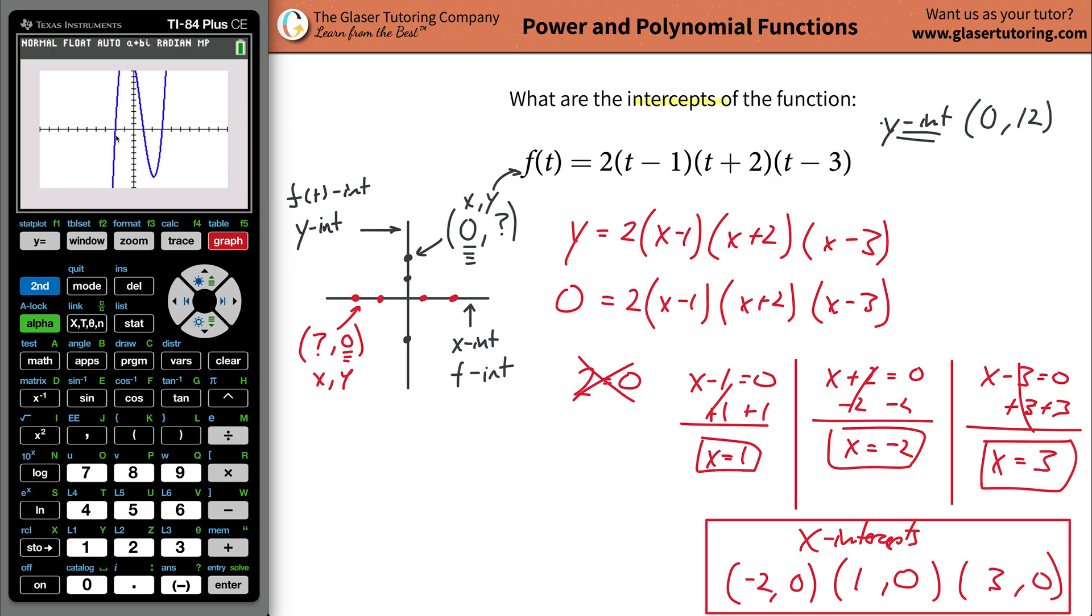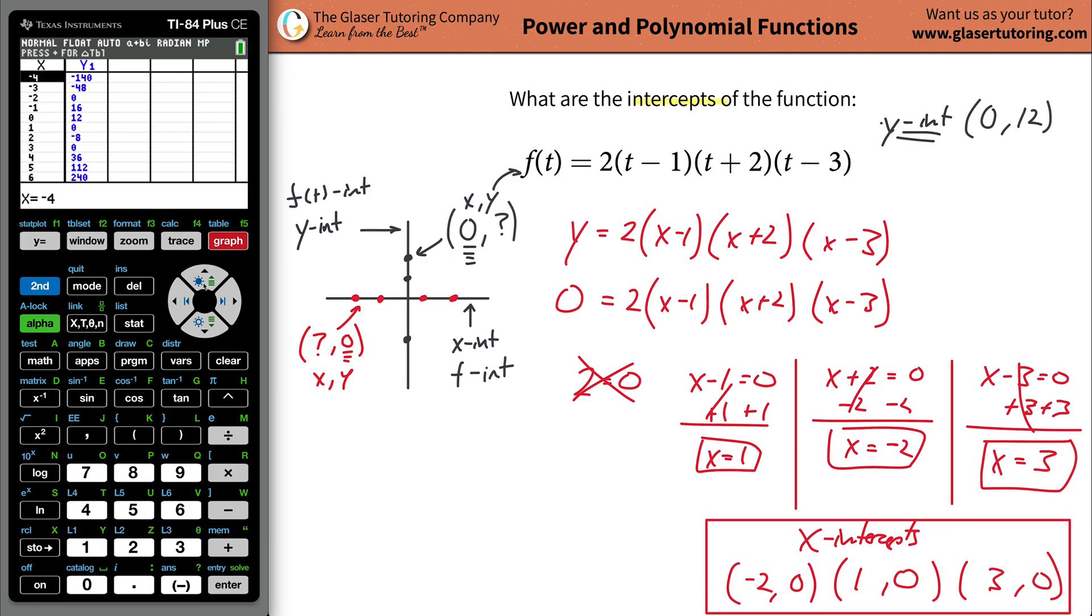Wow. Look at where this is crossing the x-axis. Does it look like it's crossing it at negative 2? Doesn't it look like it's crossing it also here at positive 1? Doesn't it look like it's crossing it here over positive 3? And isn't that what we said over here? If you still don't believe me, go to the table. Hit second graph.